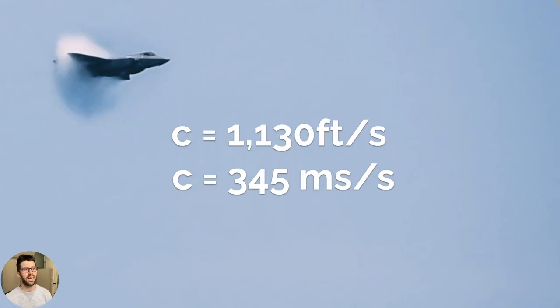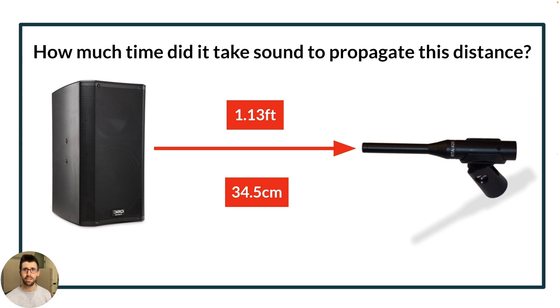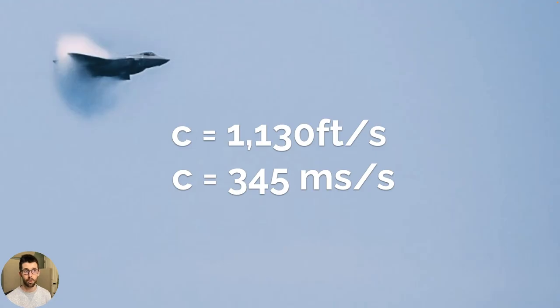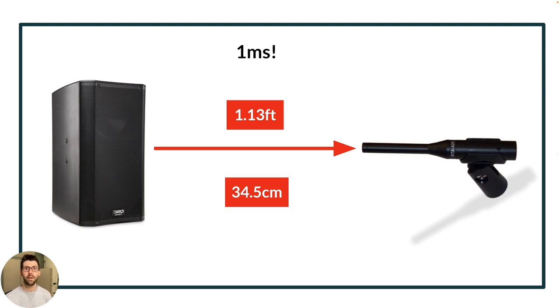Sound moves at 1,130 feet per second or 345 meters per second in air at about 71 degrees Fahrenheit. That is going to be our constant here. So since that's a constant, we can answer this question: how much time did it take sound to propagate this distance from the speaker here on the left to our measurement microphone here on the right? If that distance is 1.13 feet or 34.5 centimeters, that would simply be one millisecond of propagation time.